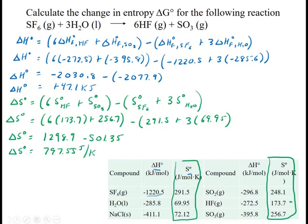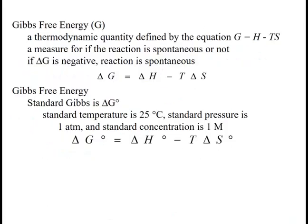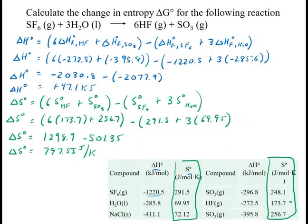I didn't mention that this is usually in joules per Kelvin. Delta H is in kilojoules. So I need to change this to kilojoules per Kelvin. By doing so, I divide by 1,000, or simply move the decimal place. It's going to be 0.79755 kilojoules per Kelvin.